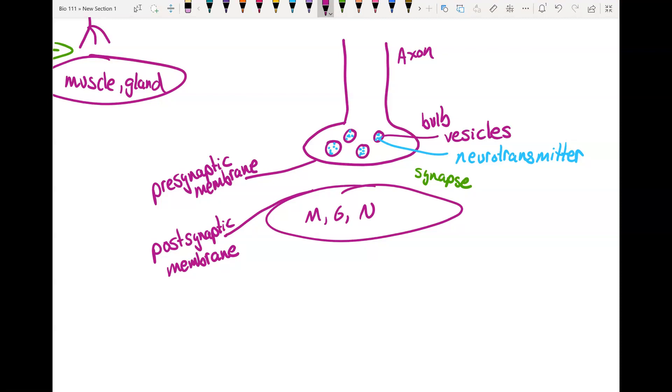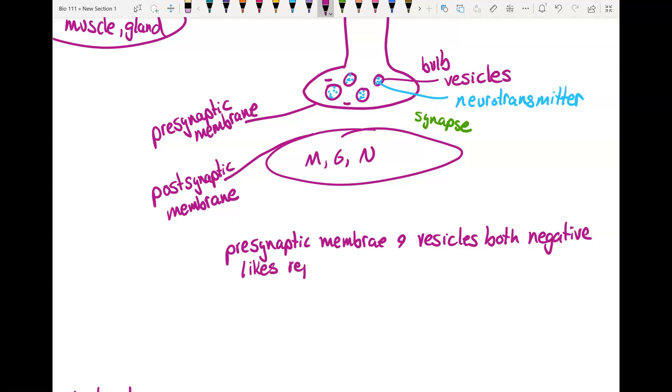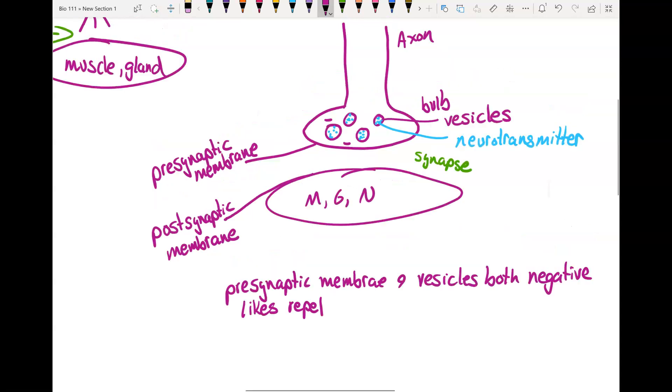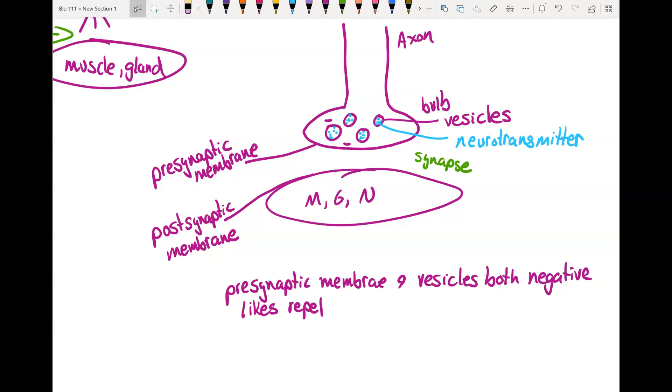The presynaptic membrane and the vesicles both have a negative charge. So think about what you learned about ions. Opposites attract, likes repel. If you have two things that both have a negative charge, they are going to repel from each other. So as long as we have this state where the vesicles and the membrane are both negative, the neurotransmitter is going to stay put. And this is why you're not just going around secreting neurotransmitter all the time. It's a controlled process, right? You only contract your muscles when you want to. So now that we want to send that signal across, we're going to have to get these vesicles to go up to the presynaptic membrane and release the neurotransmitter.